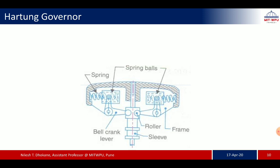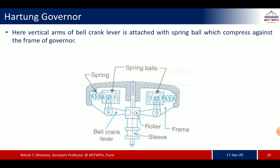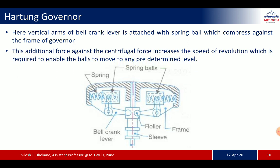The next type is the Hartung governor. Here, the vertical arms of the bell crank lever are attached with spring balls which compress against the frame of the governor. This additional force against the centrifugal force increases the speed of revolution required to enable the balls to move to any predetermined level.